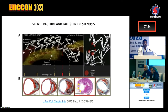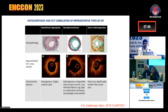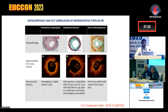Another important factor in late in-stent restenosis is stent strut fracture, which is important to identify when treating such lesions. Regarding imaging, OCT is very helpful not only to diagnose the pattern of restenosis but also for optimization of ISR-PCI. A homogeneous bright uniform layer corresponds to neointimal hyperplasia. A heterogeneous composition with in-stent necrotic core predicts neoatherosclerosis, and stent under-expansion can be clearly identified by OCT.